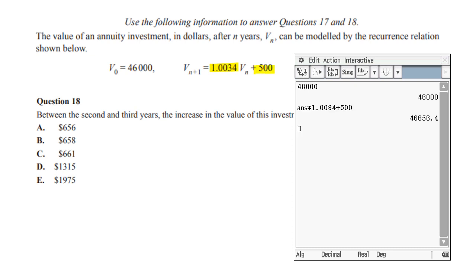But we want V2 and V3, so we just press enter a couple of times. If you do that in your calculator, you'll get V2 and V3.